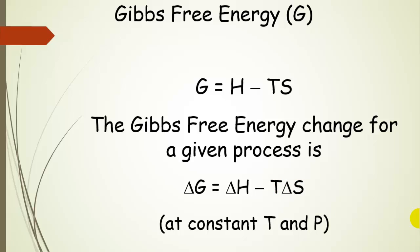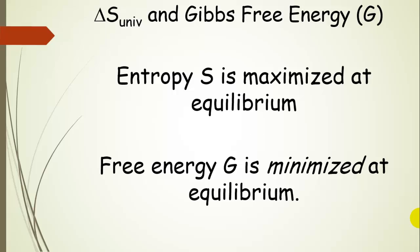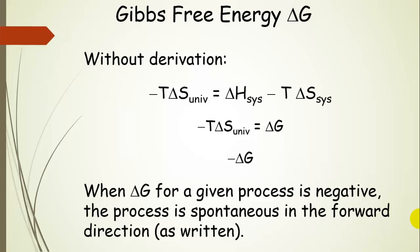This is at constant temperature and pressure. When we are going to equilibrium, we are going to be maximizing entropy, so entropy is going to be as high as it can get. And the free energy is going to be minimized — we want the free energy to be as low as possible. Without going through the derivation, the change in entropy for the universe multiplied by the temperature with a negative sign equals delta H of the system minus T multiplied by delta S of the system.